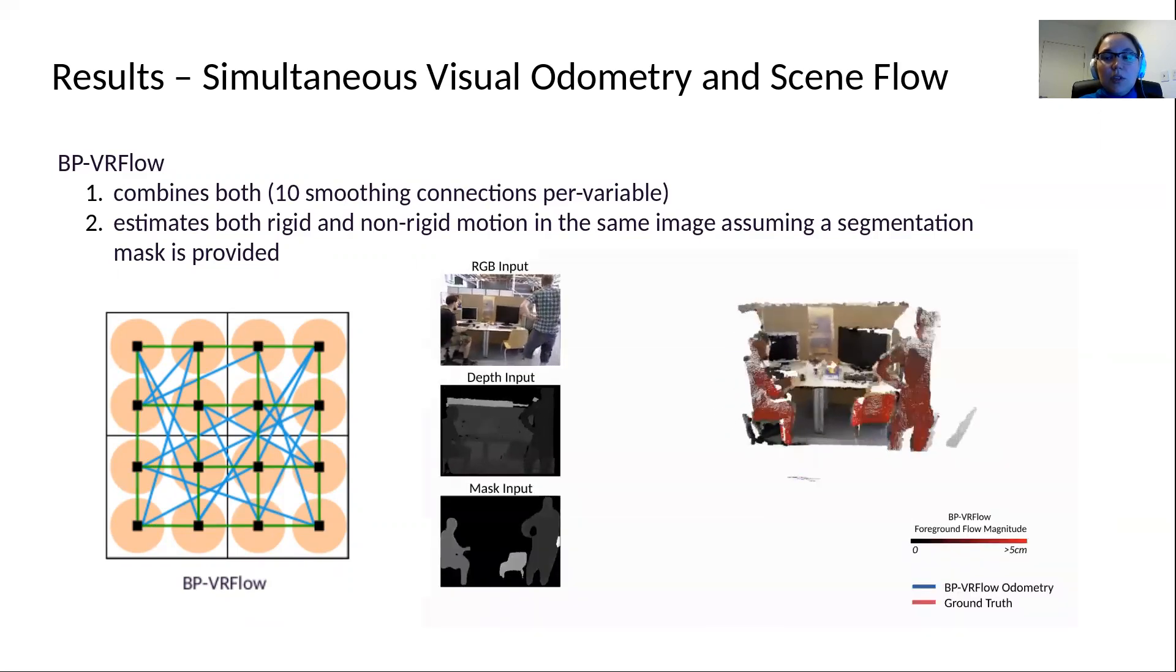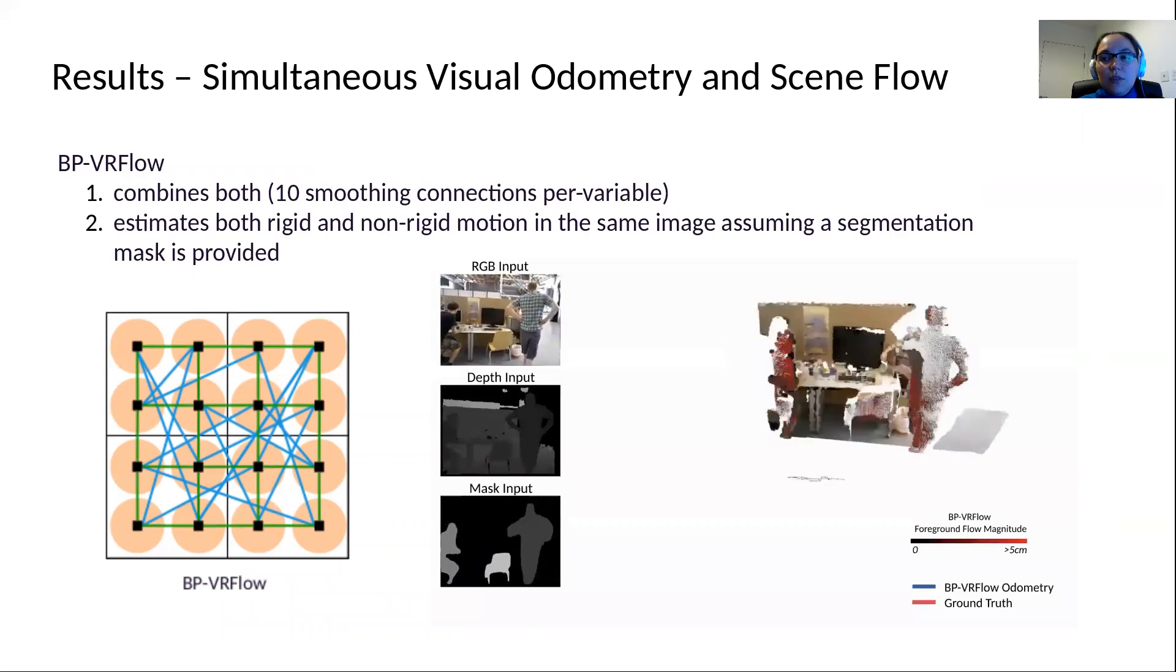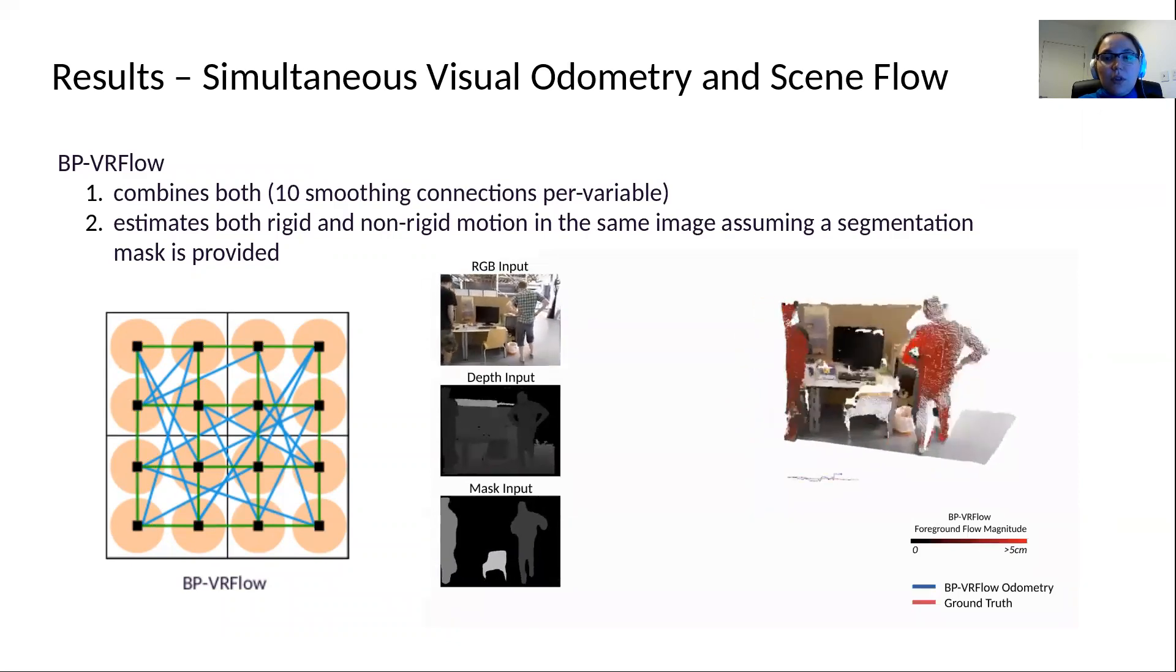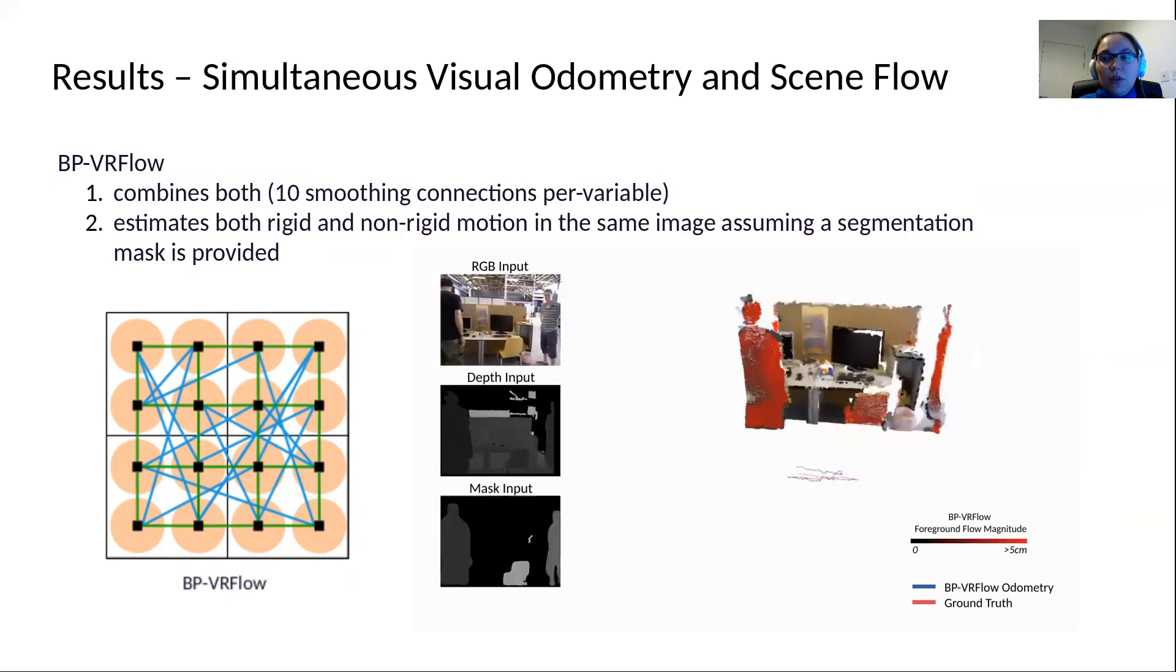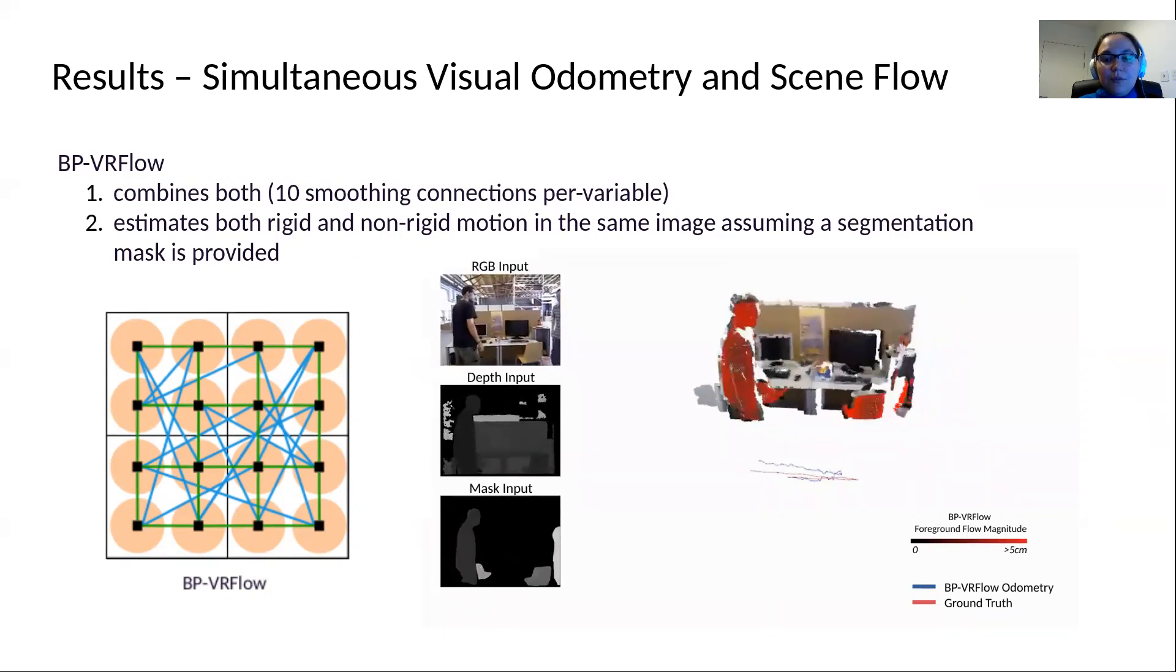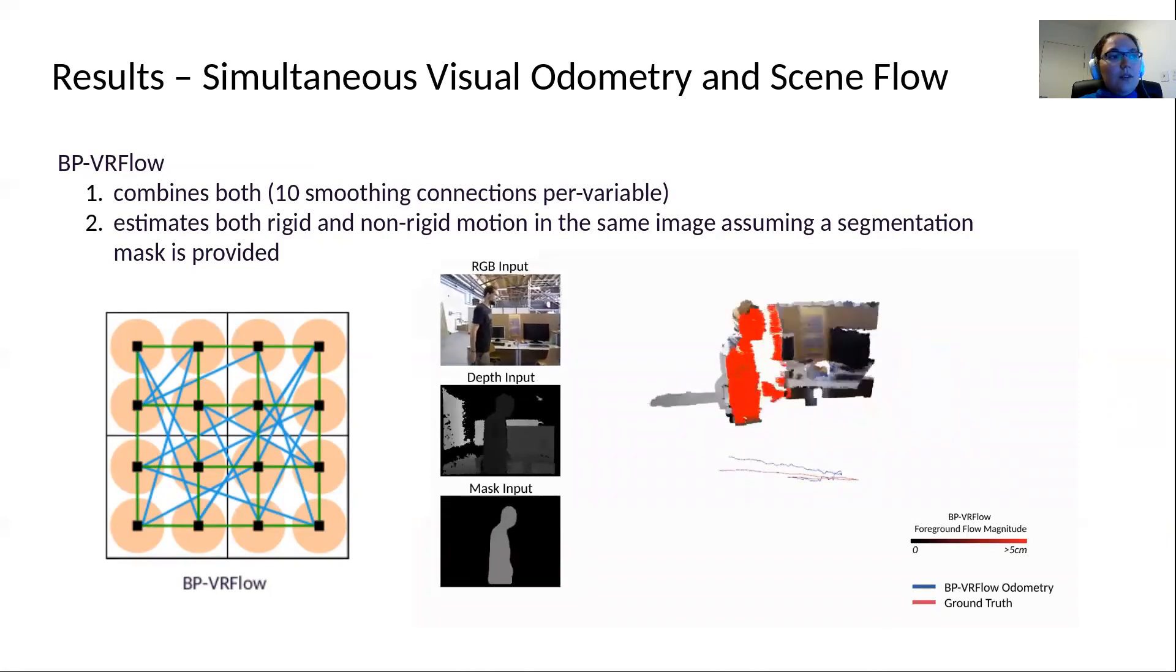This is an example. Our input is an RGBD stream and a segmentation mask of the differently moving objects. We show that we can sample visual odometry from the rigid flow field. We also show the continuously deforming flow field estimated for the two people. Thank you for your time.